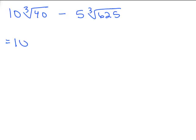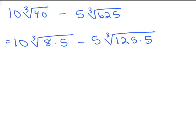Okay, so what do we have here? 40, we're looking for a perfect cube, it's a factor of 40 and that will be 8 times 5. And now 625, 125 is a perfect cube, that's 125 times 5.